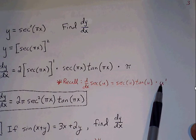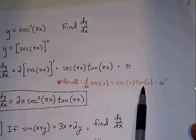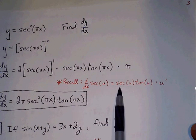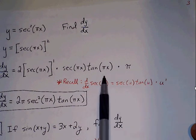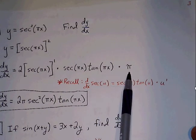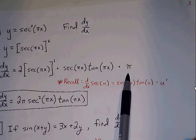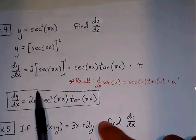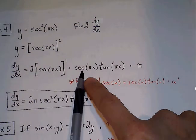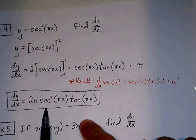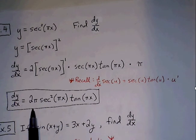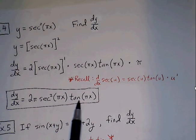We don't find the derivative of pi x until after we've taken care of the outer function derivative — secant of u tangent of u. The derivative of u, which is pi x, is just pi. Finally, we can combine. Secant of pi x times secant of pi x gives secant squared of pi x. The coefficients 2 and pi go to the front, followed by tangent of pi x.